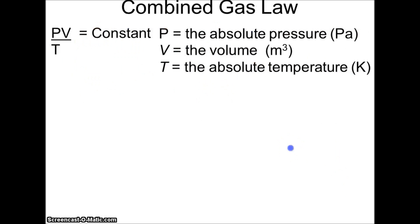We're going to combine those three relationships into what's called the combined gas law: PV over T is some constant. P is the absolute pressure in Pascals, V is the volume in cubic meters, and T is the absolute temperature in Kelvins. If you know the temperature in Celsius, add 273 to get Kelvin — so 0°C is 273 K, and 100°C is 373 K.